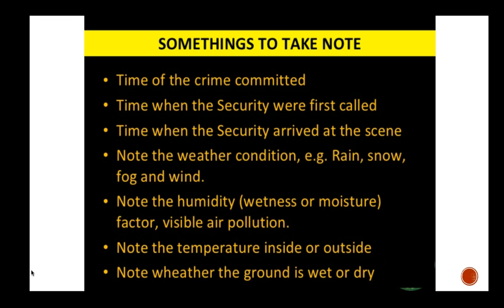First, note the time the crime was committed. Since you may not have been present, you need to ask questions of onlookers, bystanders, family members, or neighbors and record the approximate time. Be aware that they may be lying — in later stages, post-mortem examination may reveal that their statements were incorrect, helping you identify the suspect.